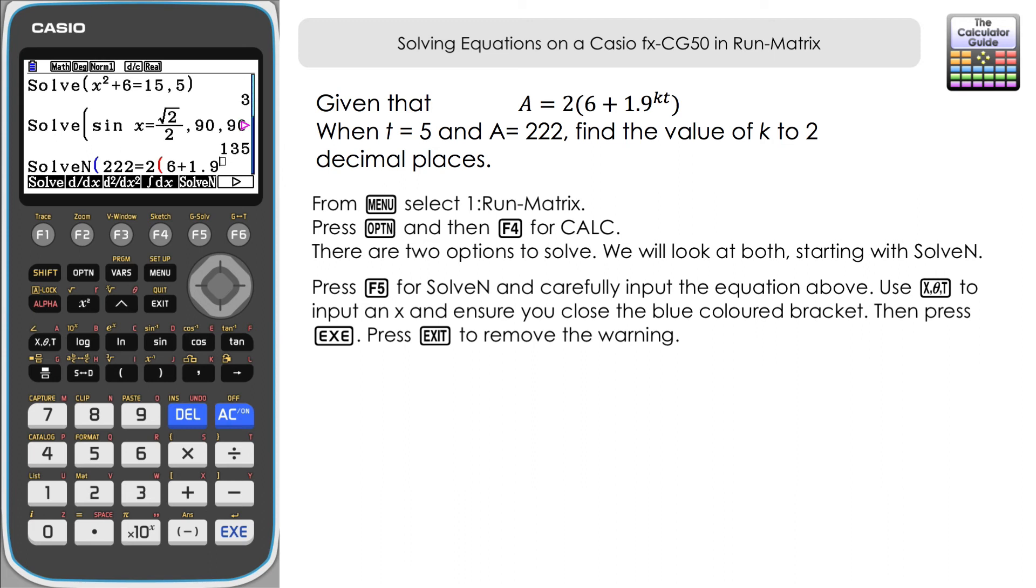Equals and then 2 open brackets 6 plus 1.9, and then we'll raise to the power of and then we're just going to substitute k for x and times 5, t is 5. Close brackets. Close again. Execute. Just the warning again that more solutions may exist. We'll exit out of that. And here we have the solution. So we're giving that to two decimal places, that's 1.45.